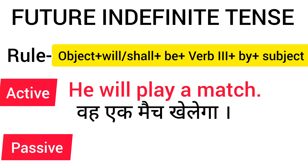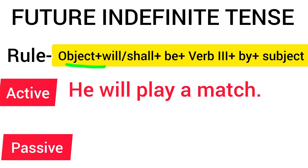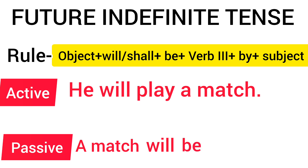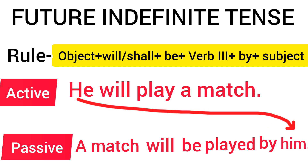Next sentence is: 'He will play a match.' First we will write the object. What is the object? A match. We write 'a match', then 'will' goes with it — 'a match will' — then we add 'be' — 'a match will be' — and play's third form is 'played'. So: 'A match will be played.' Then 'by', and the subject was 'he', so the object becomes 'him'. Full sentence: 'A match will be played by him.'